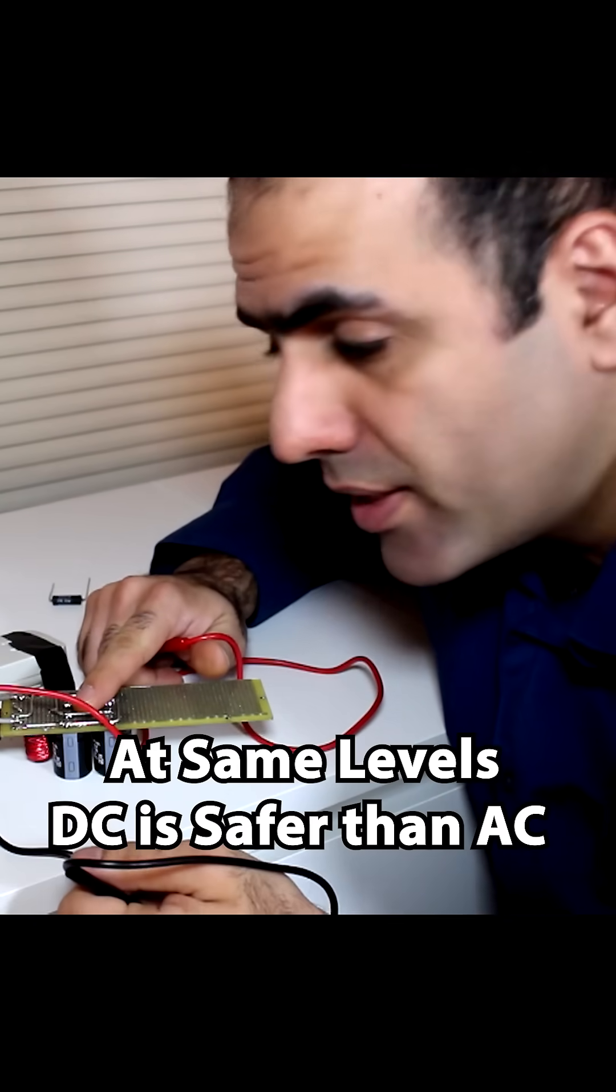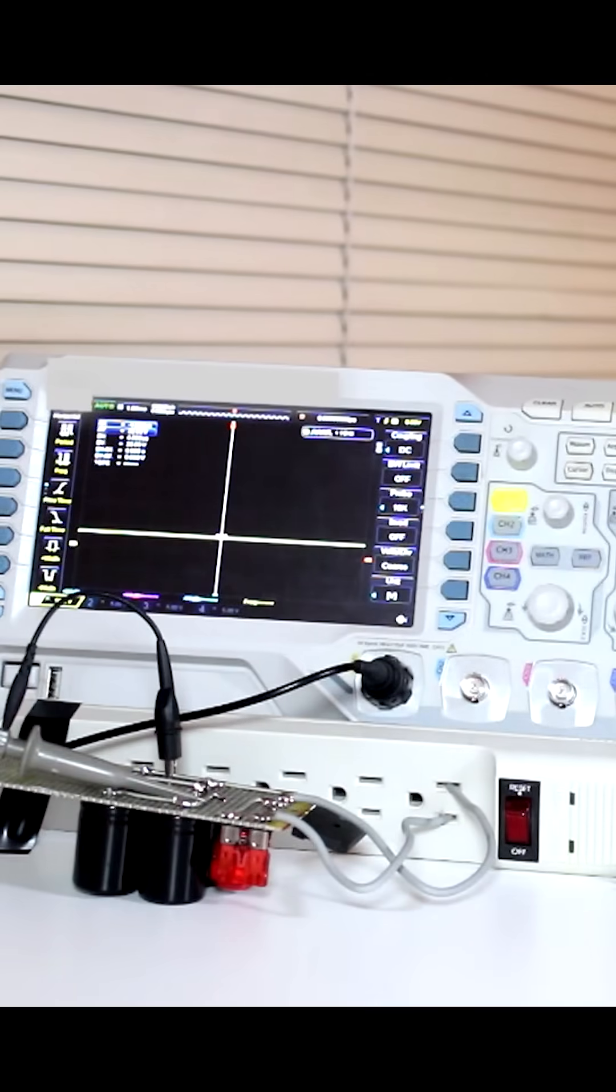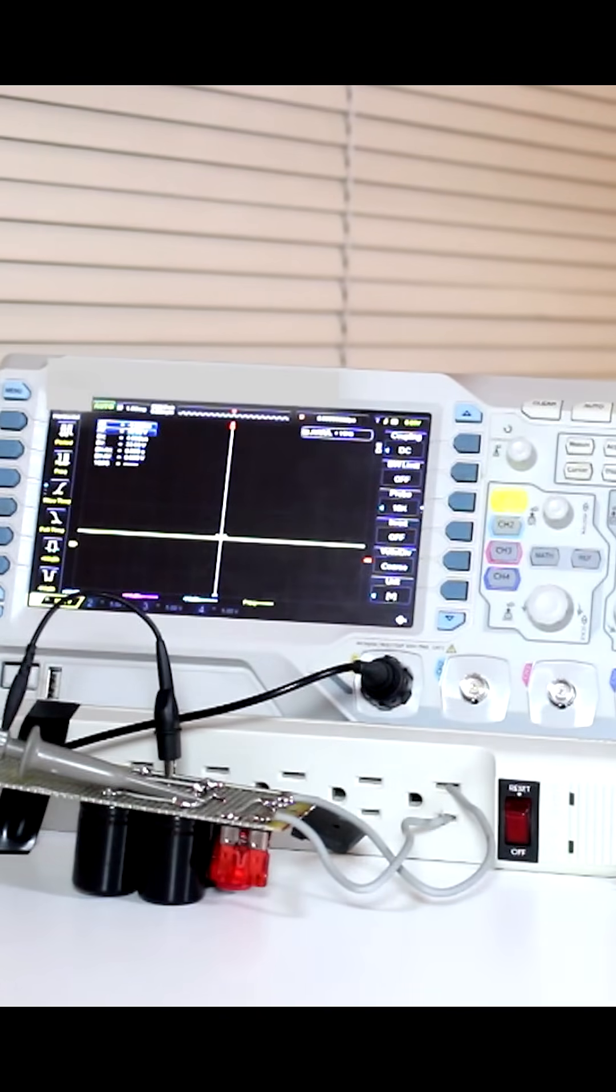DC is much less dangerous than AC. I connected the probe to my output lines, connected my circuit to this power bar, and now I will turn the power bar on. My fuse just blew up.